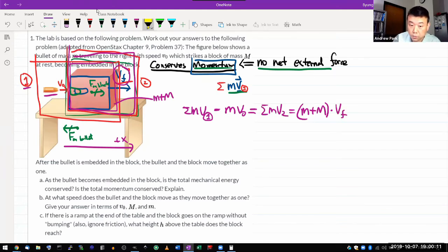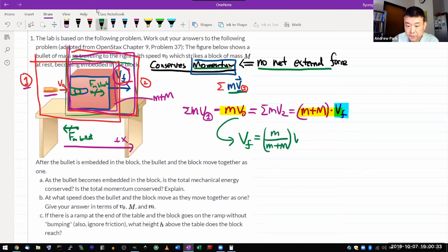So the final momentum, small m plus the big M times the final velocity. This is your one equation. Fortunately, I only have one unknown, the final velocity of the combined blocks. So let's solve for that. You get the final velocity is equal to m over small m plus big M times V naught. That's it. That's the answer you would find through application of conservation of momentum.